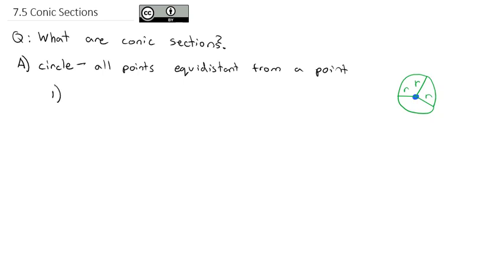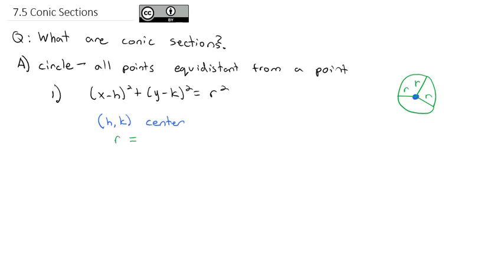The equation that builds a circle like this is (x minus h) squared plus (y minus k) squared equals r squared, where the point h comma k is the center of the circle and r is equal to the radius of the circle.